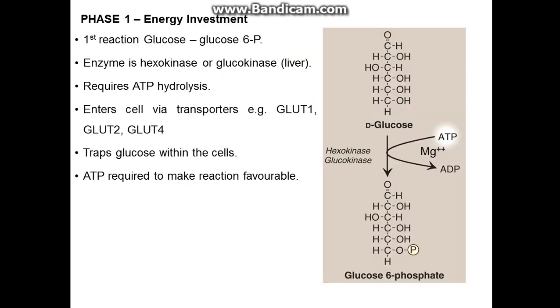The energy investment phase is first. Reaction 1 converts glucose to glucose-6-phosphate. The hydrogen is pulled off on carbon 6, from a hydroxyl group, to give a phosphate group. The enzyme is either hexokinase or glucokinase — we'll discuss that in a moment — but glucokinase is only found in the liver. It requires ATP hydrolysis, using 1 ATP molecule, and glucose enters the cell via transporters such as GLUT1, GLUT2, or GLUT4. This reaction takes place in the cytosol of the cell and traps glucose within it.